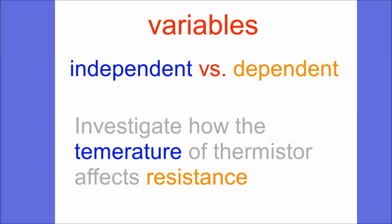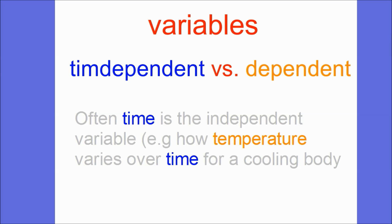For example, the resistance of an LDR depends on the amount of light falling on it. To figure out which one is independent and which is dependent, look at the phrasing: 'investigate how the temperature of a thermistor affects the resistance' — the first one mentioned is usually the independent variable. Watch out for rephrasing like 'how is the resistance affected by the temperature.' In general, if unsure, put the first one as the independent variable.